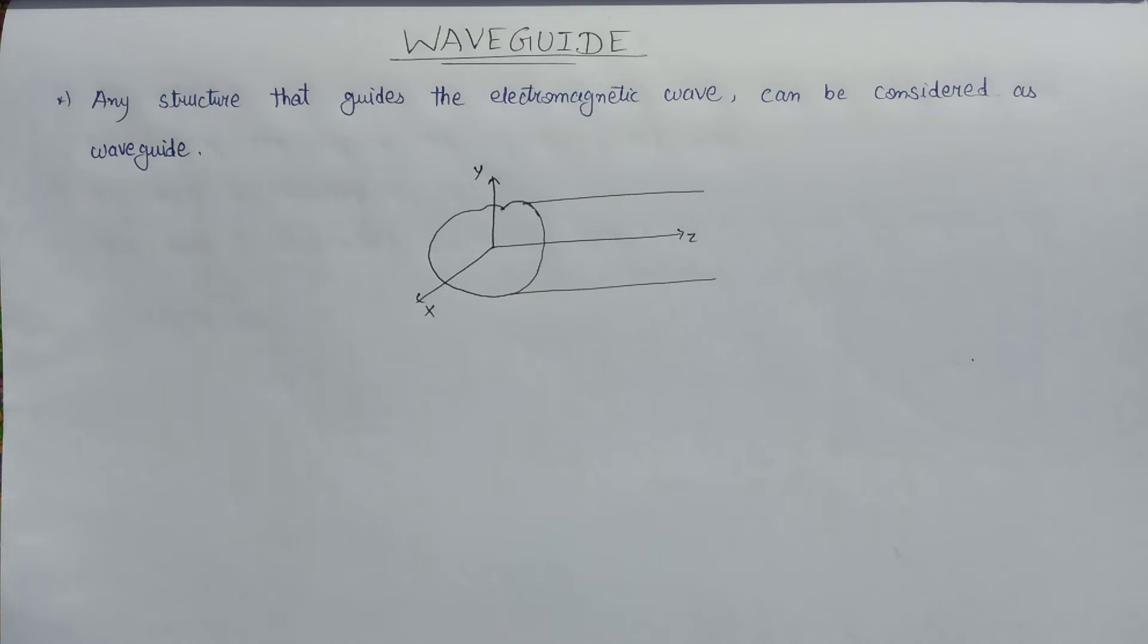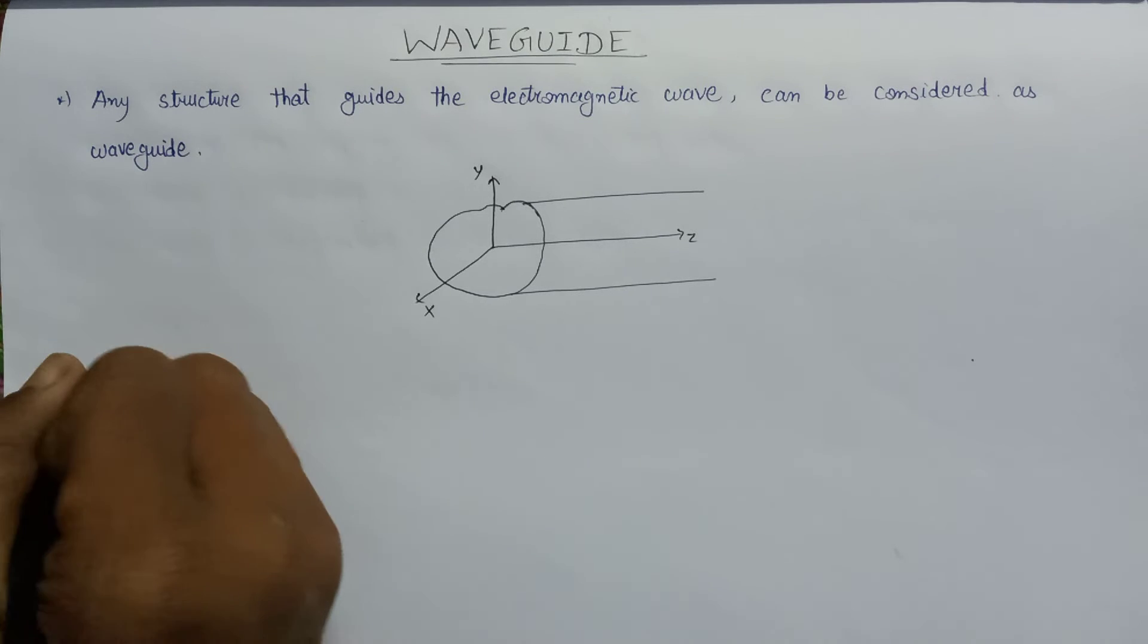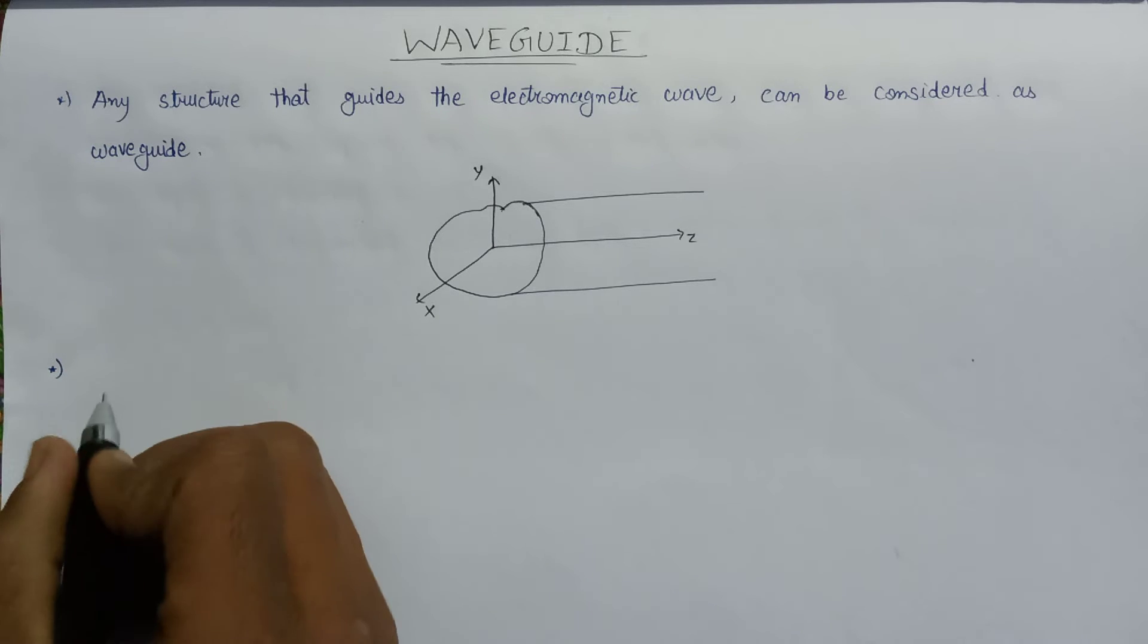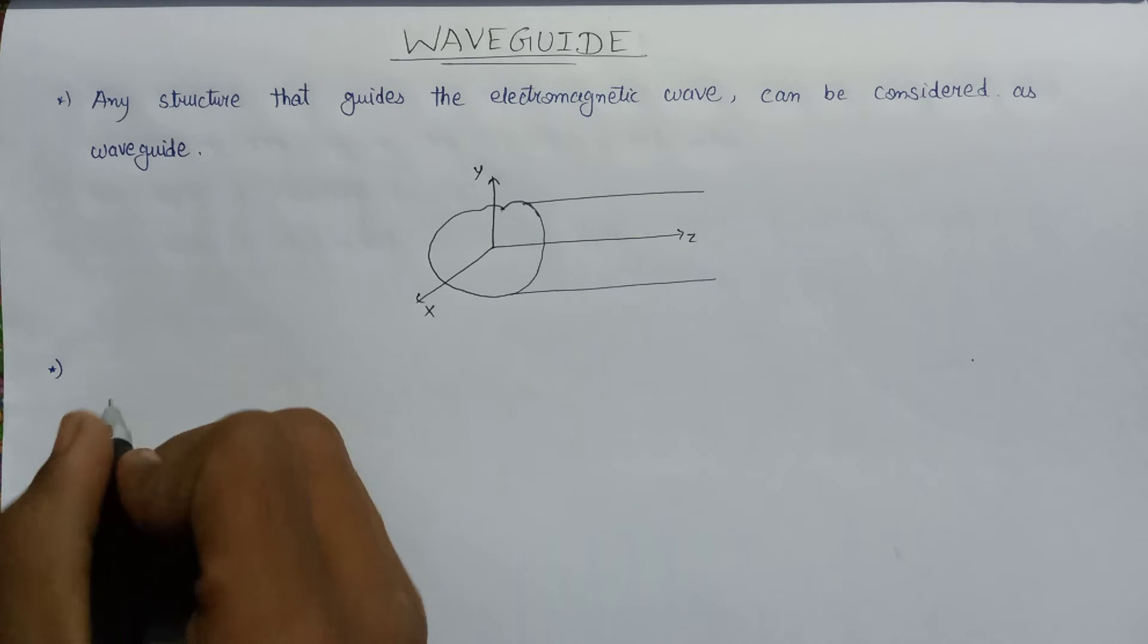Waveguides can also be considered as coaxial lines without center conductor. It can be considered as a special type of coaxial line which has a lack of center conductor.